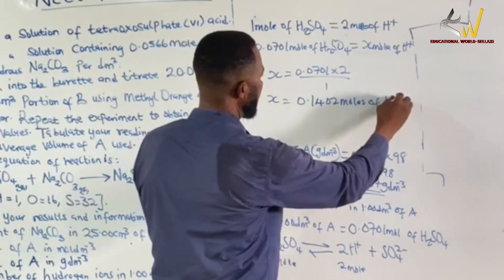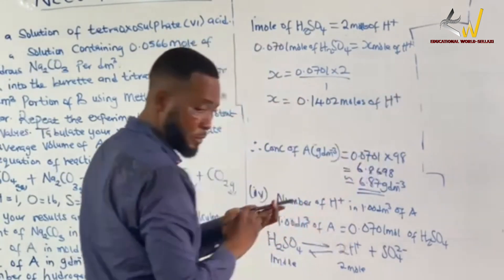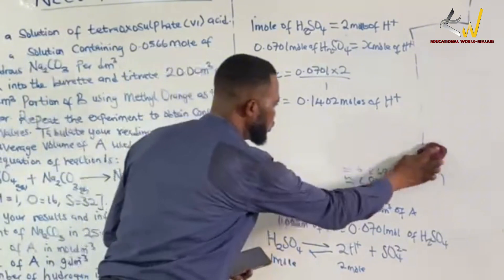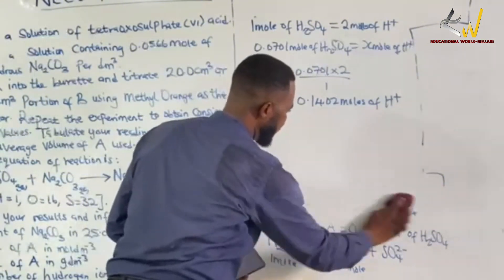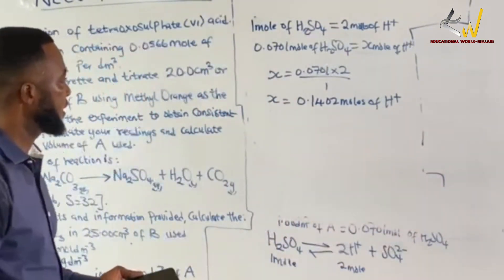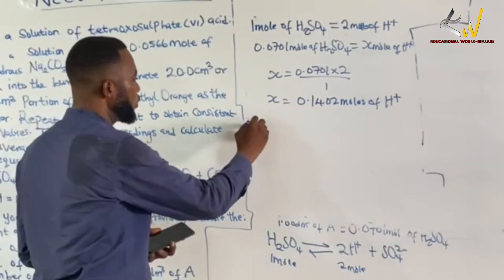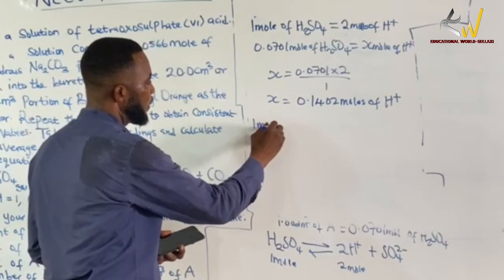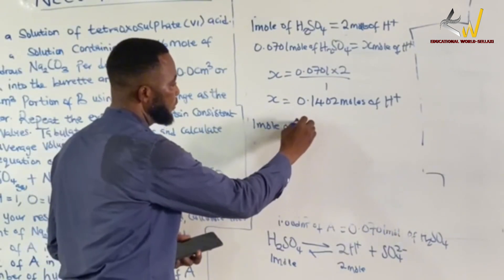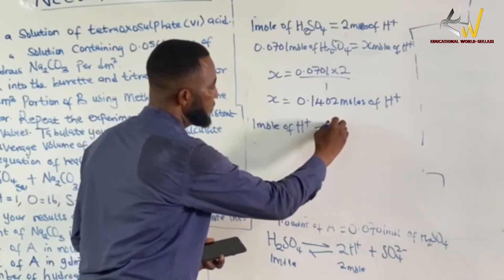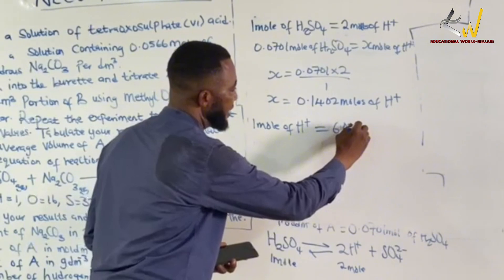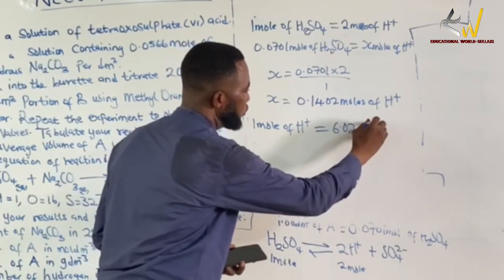Now we've located our concentration of acid. We're helping viewers understand, and the concentration of B — we now use it to find further values.